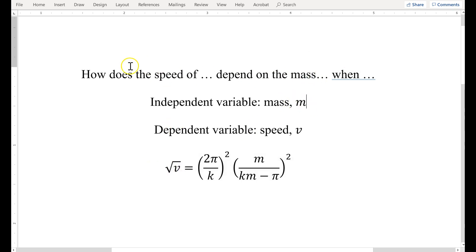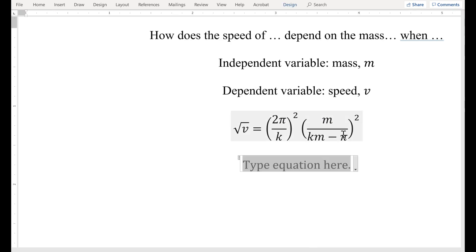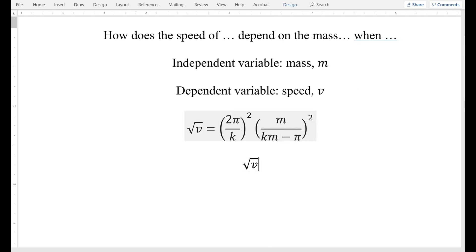So I can develop an experimental equation that is based on this theoretical equation. Specifically, I will have measurements of v, I will have measurements of m, and according to this equation, the square root of v should be proportional to m over km minus pi.